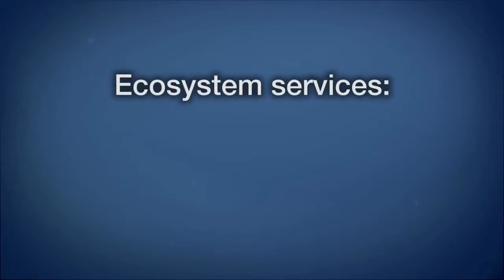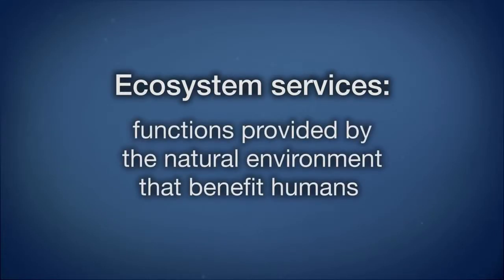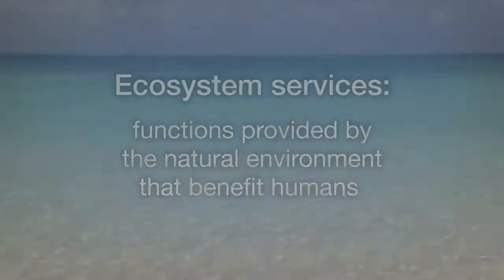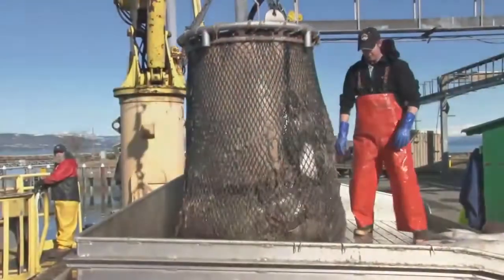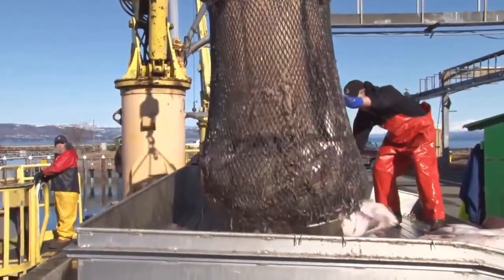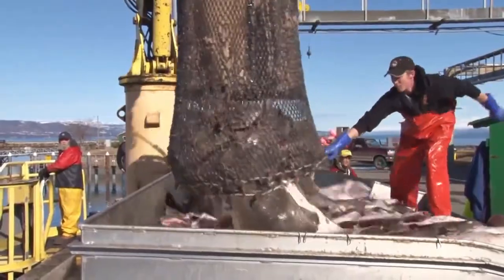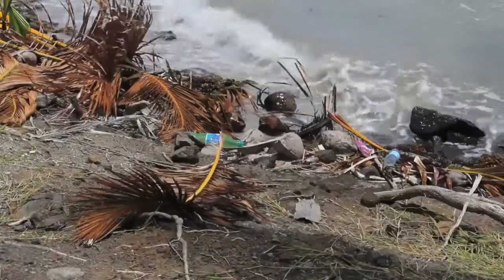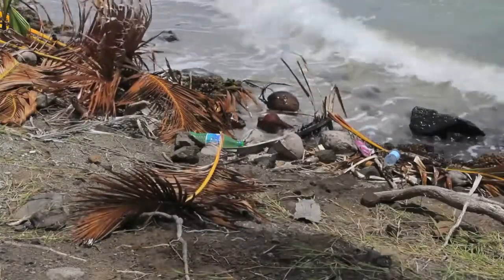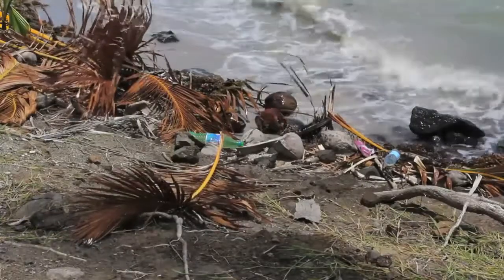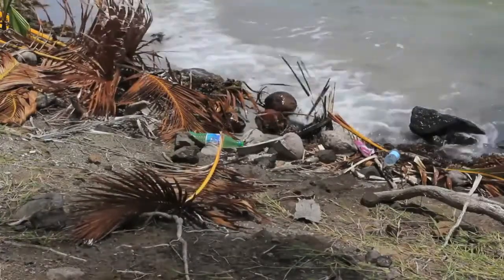Natural environments provide something called ecosystem services. Ecosystem services are functions that the natural environment provides that are important to human life. Clean water, clean air, fish, and food crops are the result of ecosystem services. If we degrade or destroy our natural systems, we may very well impair their ability to provide ecosystem services.